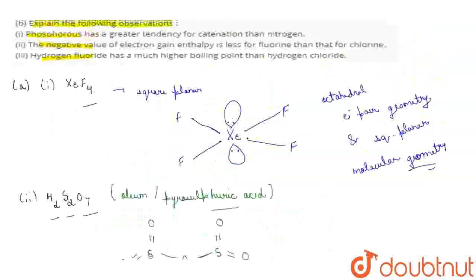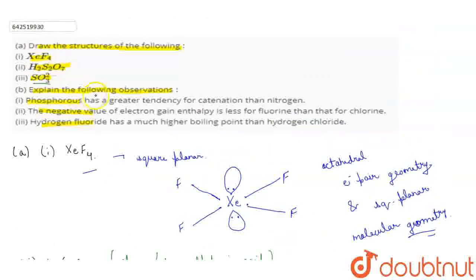Now, moving to the second part of the question. That is, explain the following observations. So first observation is: phosphorus has a greater tendency for catenation than nitrogen. So in this question, we have to explain why phosphorus has a greater tendency for catenation than nitrogen.